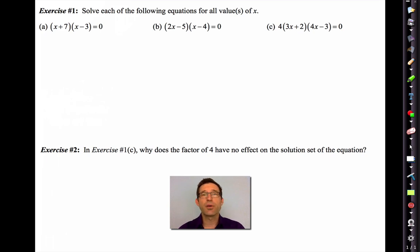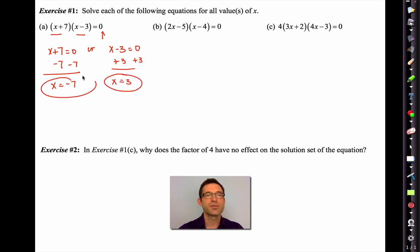Exercise number one, solve each of the following equations for all values of x. I don't want to look at this and go, I got to multiply these things out. I've got a product equal to zero. So either x plus seven is equal to zero or x minus three must be equal to zero. One of those two has to be equal to zero. I subtract a seven in both cases and x equals negative seven. In this case, I add a three in both cases and x equals three. So these two values of x solve that equation.